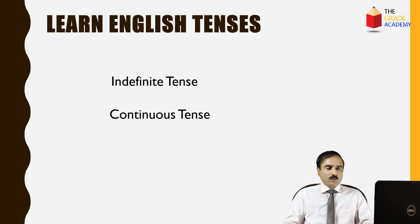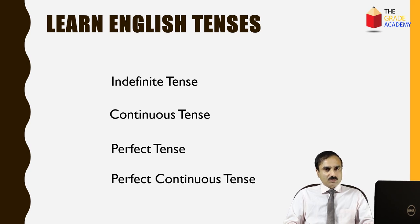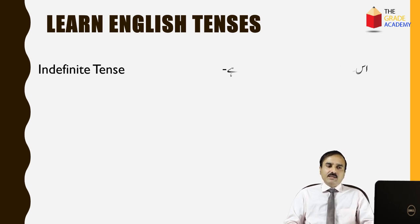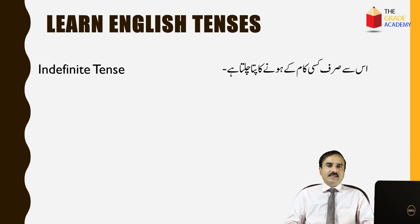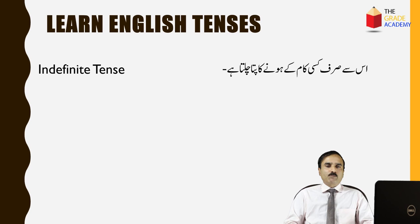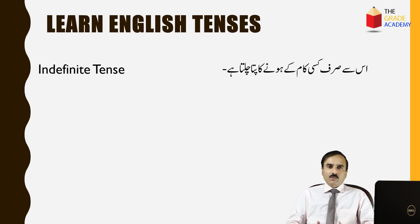The four types are: indefinite tense, continuous tense, perfect tense, and perfect continuous tense. जो indefinite tense होता है, यह सिर्फ किसी काम के होने का बताता है — इससे यह नहीं पता चलता कि काम हो रहा है या हो चुका है। इसे indefinite tense कहते हैं। जैसे — वो स्कूल जाता है, वो स्कूल गया, वो स्कूल जाएगा। इसमें सिर्फ action की बात हो रही है, time की बात specifically नहीं।